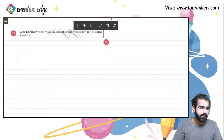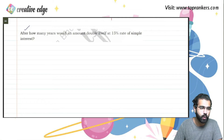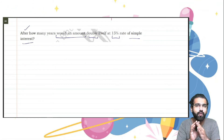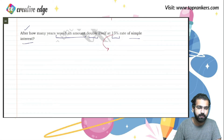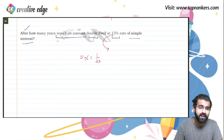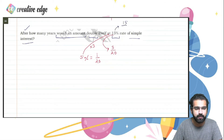Here is another interesting question that will give you a lot of insights. After how many years would an amount double itself at a 15% rate of simple interest? If you attended the video on percentages, you learned percentage-to-fraction conversions. To convert 15% into a fraction: 5% is 1/20, and 15% is triple of 5%, which means 15% = 3/20. Alternatively, 15/100 simplified: dividing both by 5 gives 3/20.